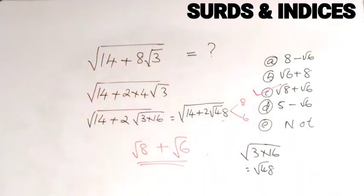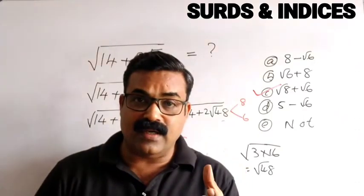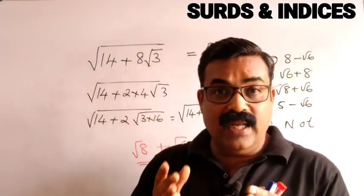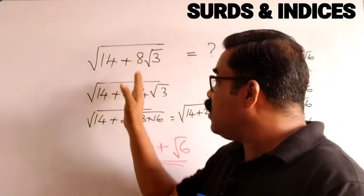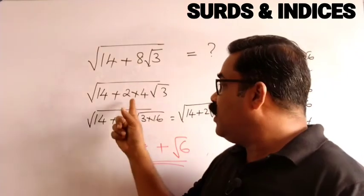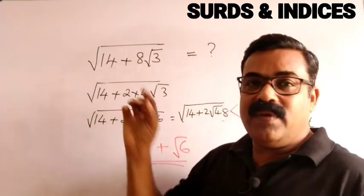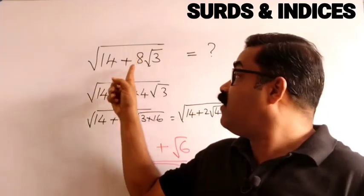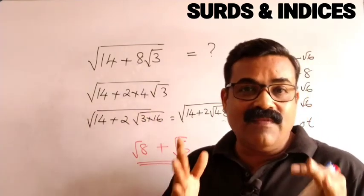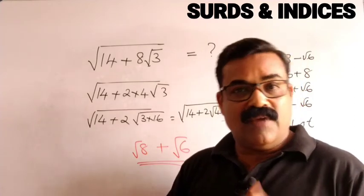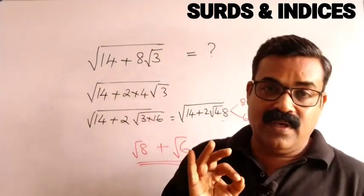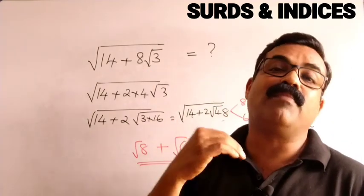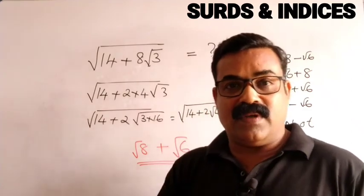One very important thing to remember: whenever you see this type of question, ensure the coefficient of the square root is 2. If it is not 2, split it so that you extract a 2. In exam questions the coefficient will always be an even number — you will never get an odd number like 7 or 11 — because only even numbers can be split this way. Check previous year papers and you will always find an even number.